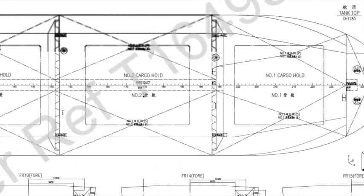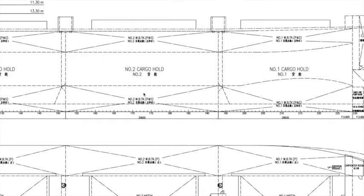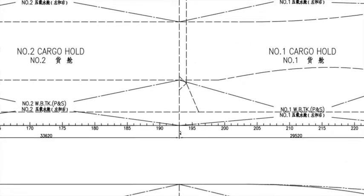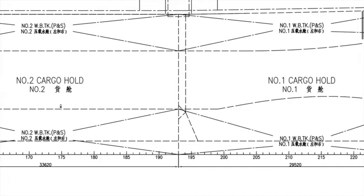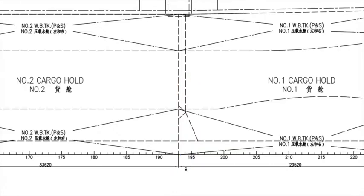Let's go to the side view of number one and number two cargo holds. Here you can see number one and number two cargo holds — the forward portion limit of number two cargo hold ends at frame 194. Similarly, for number one cargo hold, the aft limit is at frame 193. I hope that makes sense and is clear to you.